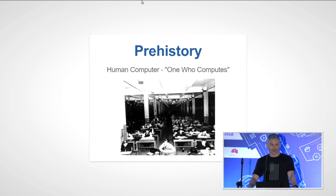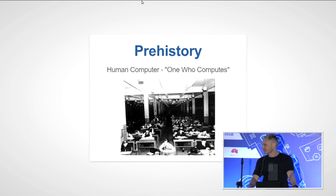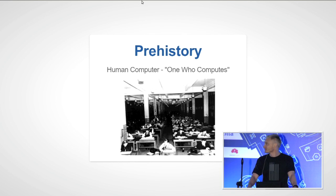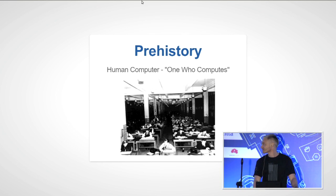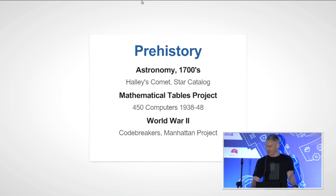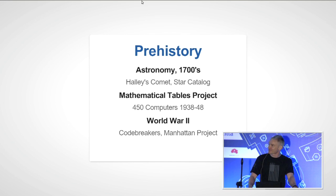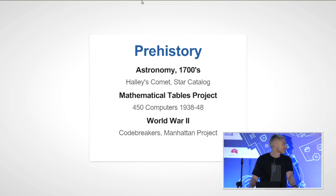The original definition of computer was one who computes — typically a semi-skilled individual who could only perform some basic arithmetic. When a scientist had a problem to solve, they'd set up a room full of these people, break the problem into small pieces, give each person a small step. They'd do their work and pass the result on. This was used to solve fairly significant problems: they catalogued tens of thousands of stars in the 1700s and successfully predicted the return of Halley's Comet.